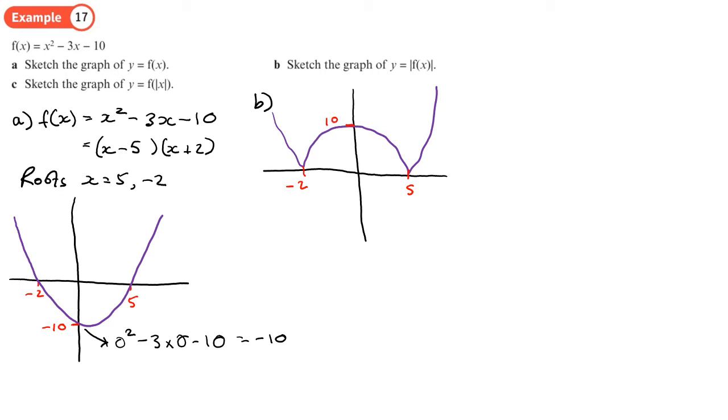And see, now the modulus sign is around just the x, which means we take the positive part of the graph and we flip it into the negative part of the graph.